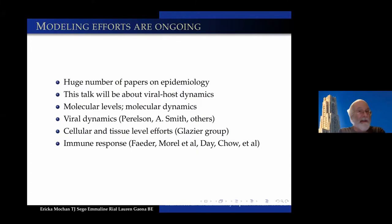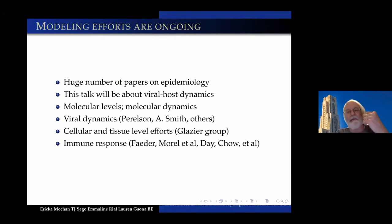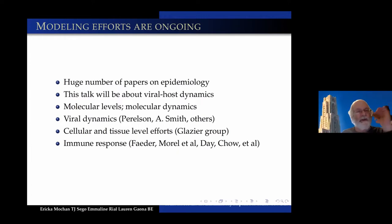There are lots of modeling efforts ongoing, a huge number of papers on immunology. This talk is mostly about viral-host dynamics. There's lots of work on more detailed models — molecular levels, molecular dynamics models, viral dynamics by Amber Smith and Alan Perlson, and cellular and tissue level effects. I believe this Fader group is the one that Professor Macklin just talked about. And there's also cellular and tissue level efforts, which is James's work.